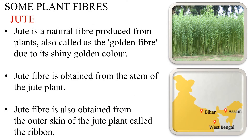There are two types of fibers: natural fibers and artificial fibers. We obtain natural fibers from plants and animals. We will now study some plant fibers. We obtain plant fibers from plants such as cotton and jute.